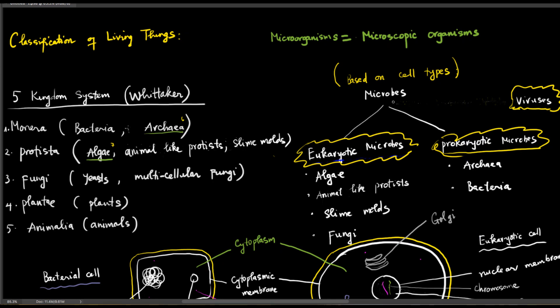Based on the ways that organisms obtain food, their cell structure, and the number of cells that they have, all living organisms can be divided into at least five or seven kingdoms. According to the five kingdom system,